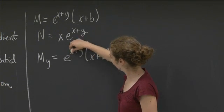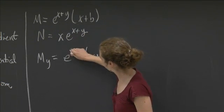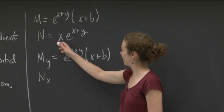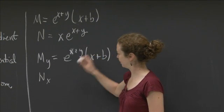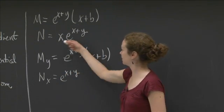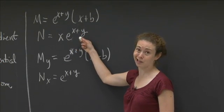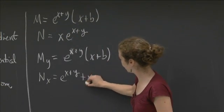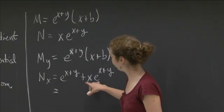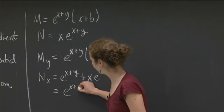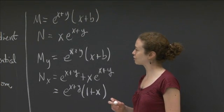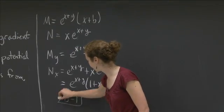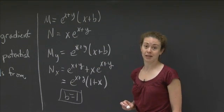Okay, now n sub x is going to have two parts. The derivative with respect to x of this is 1, and so I'll have an e to the x plus y. And the derivative with respect to the x of e to the x plus y is just e to the x plus y, for the same reason as the derivative with respect to y was the same. So then I'm just going to get a plus x e to the x plus y. So that means if I factor that out, I get an e to the x plus y times (1 plus x). And we see that if F is going to be a gradient field, then b has to equal 1. That it can only have one value, and so b has to equal 1.